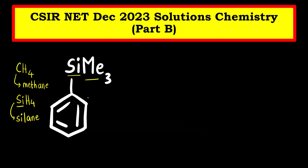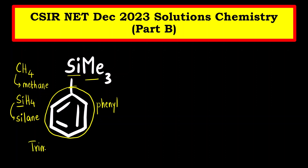So what will be the name of this compound? Three methyl groups are present and a benzene ring. The benzene ring when it is present as a substituent, we write it as phenyl. M comes first for methyl and then phenyl. So the name of this is trimethylphenylsilane. It is a derivative of silane — all four hydrogens are replaced by other groups: three by methyl groups and one by the benzene ring, that is the phenyl substituent.